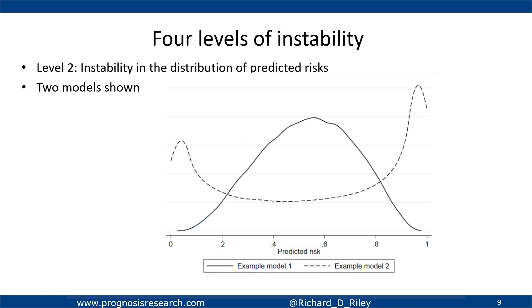The next level is the instability in the distribution of predicted risks. For each of the 1,000 models I could plot the distribution of risks in the population. For one model, the distribution of predicted values in the population goes from 0 up to about 1, with a roughly normal shape. But for another model developed with the same sample size of 100 individuals, the distribution is very different — starting to reveal instability at the individual level, where the distribution across two models developed with the same sample size is very, very different. This is starting to be a worry.